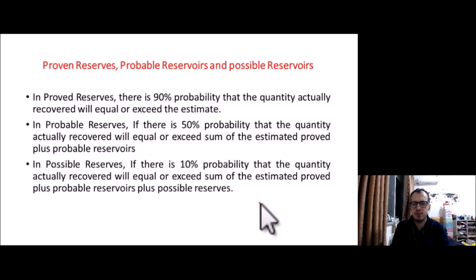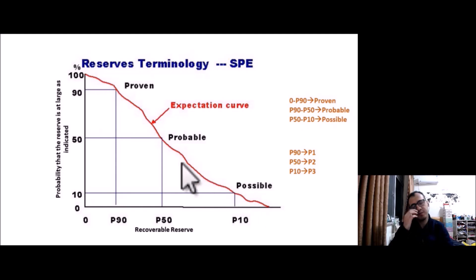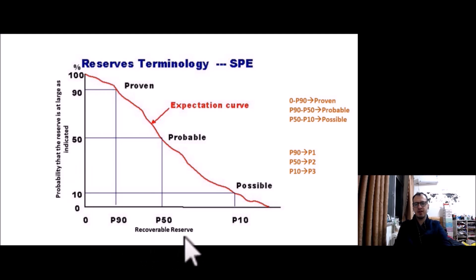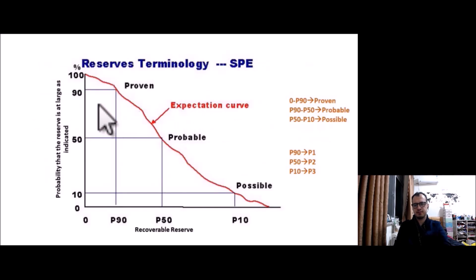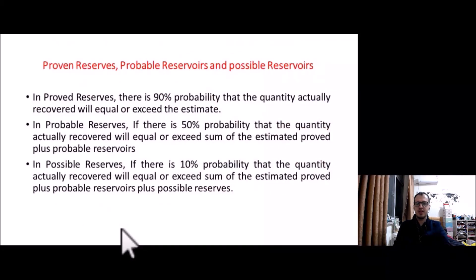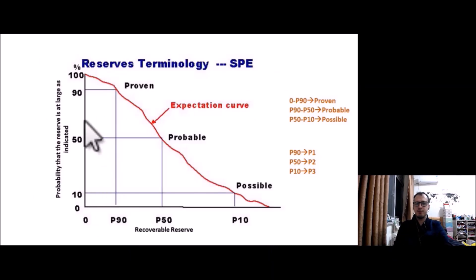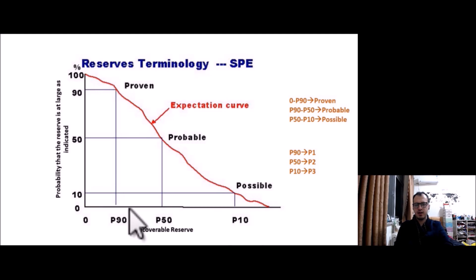Let's look at a chart where the y-axis is probability and the x-axis is recovery of the reserve. Going back to the first definition — in proved reserves there is a 90% probability that the quantity actually recovered will equal or exceed the estimates. This corresponds to P90. So at P90 we have a 90% probability, and the proved reserve zone runs from 0 to P90.